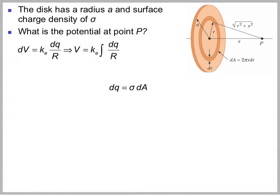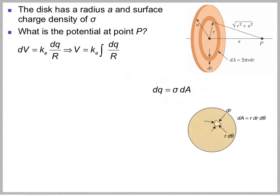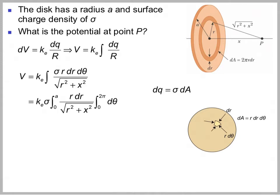Where does 2 pi r dr come from? The circumference is 2 pi r and the thickness is dr. We can also integrate dA directly: the area element has thickness dr and arc length r dθ, so dA equals r dr dθ. So V is k times the integral of sigma r dr dθ over the square root of r squared plus x squared. Sigma is constant and comes out, and the theta integral from 0 to 2 pi gives 2 pi — that's where the 2 pi came from.